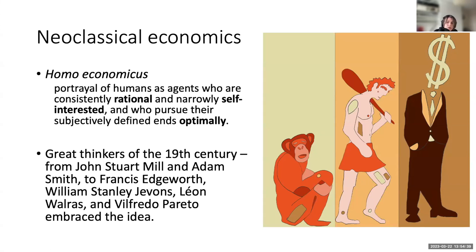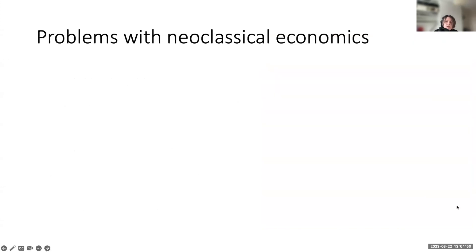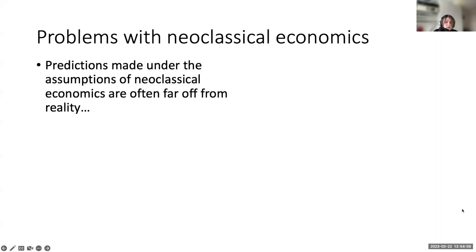Homo economicus portrays humans as consistently rational, narrowly self-interested agents who pursue their ends optimally. The assumptions of rationality, self-interest, and optimal decision-making were key for neoclassical economists and allowed the discipline to build systematic models that accurately describe a wide variety of processes. However, these assumptions are not bulletproof — I can name dozens of scenarios where human behavior is not just slightly off from neoclassical predictions, but actually diametrically opposite to what the theory suggests.